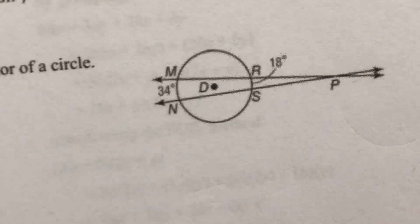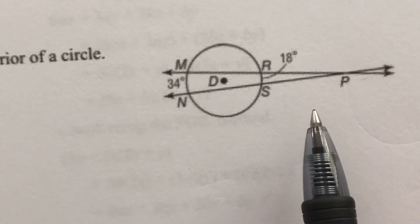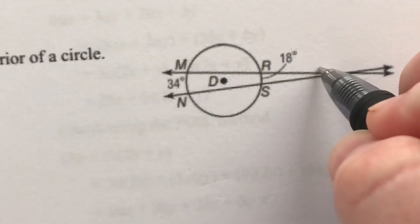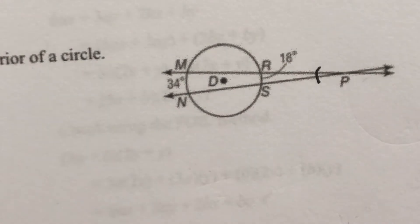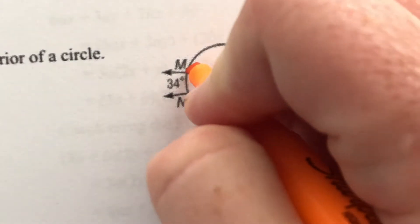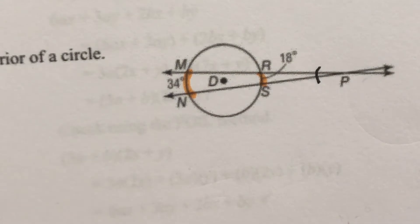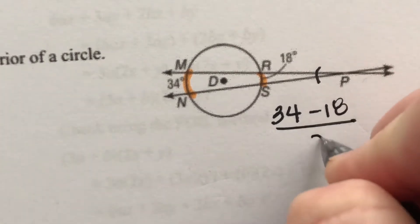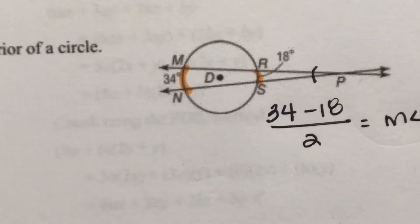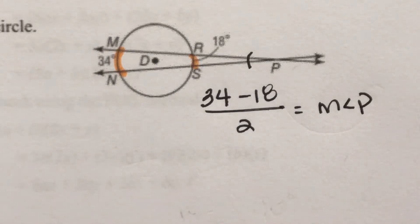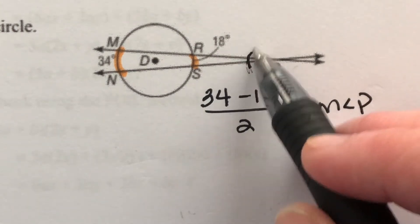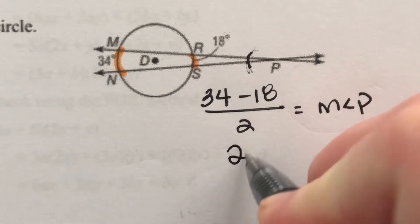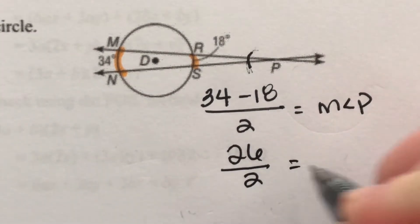Here we want to know the measure of angle P. We've got two secant lines, and they create two arcs. We're going to do big minus little divided by two. So 34 minus 18 divided by two gives us the measure of our angle. 34 minus 18 is 16.